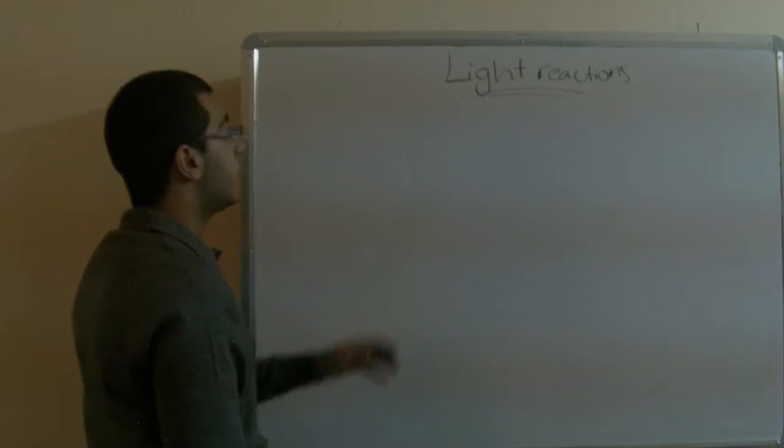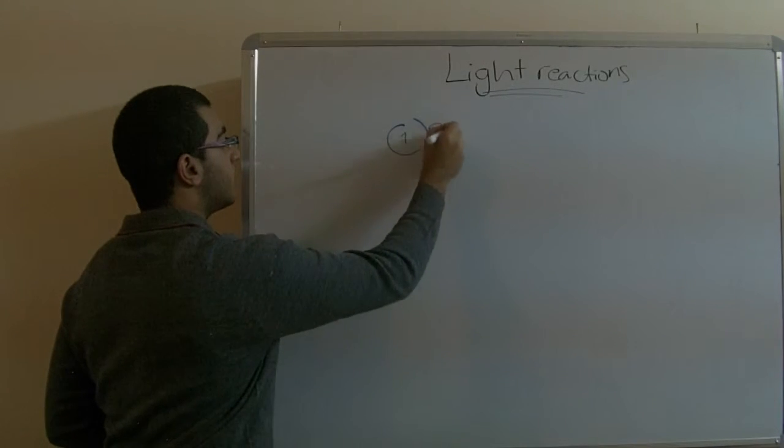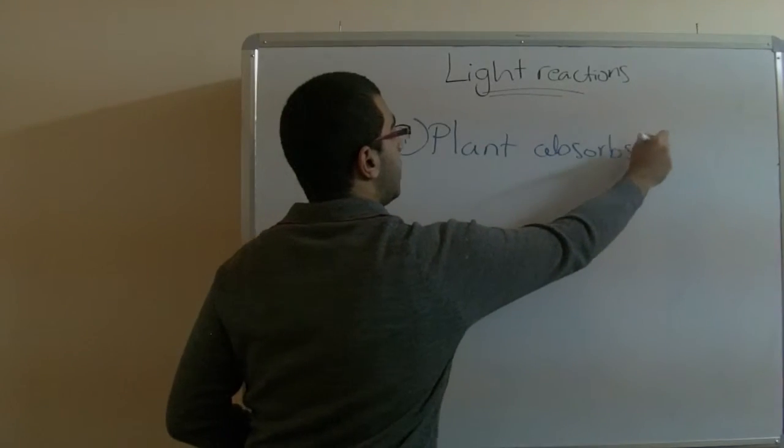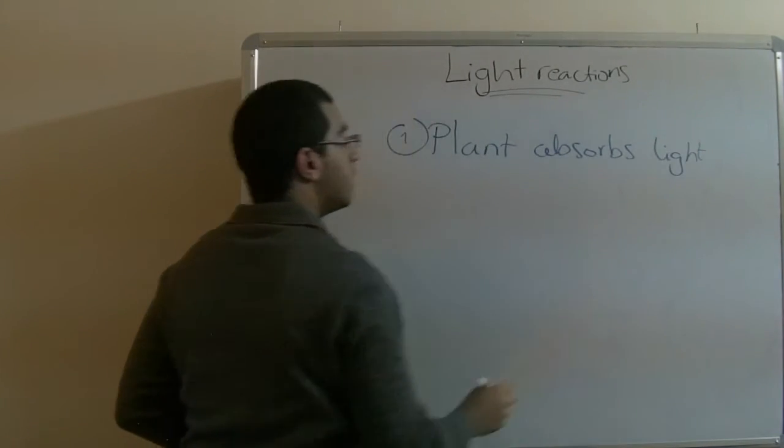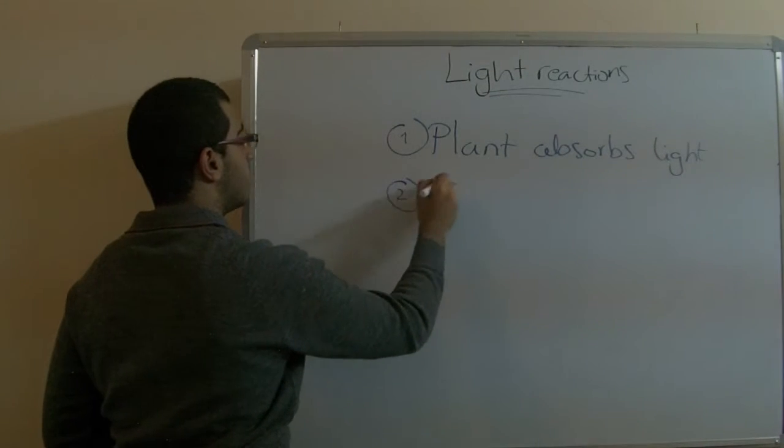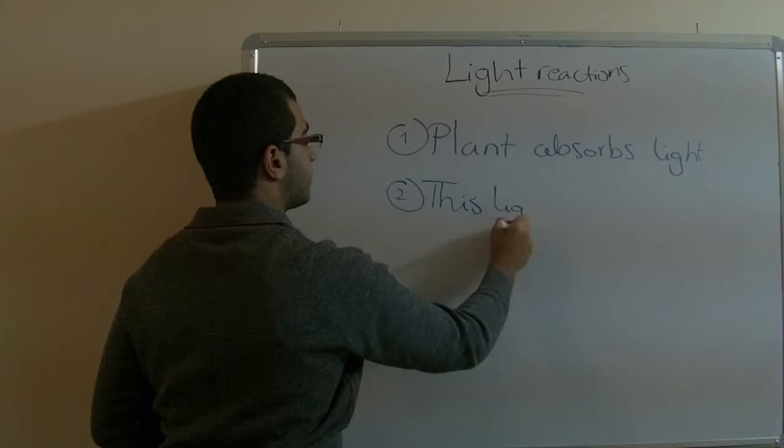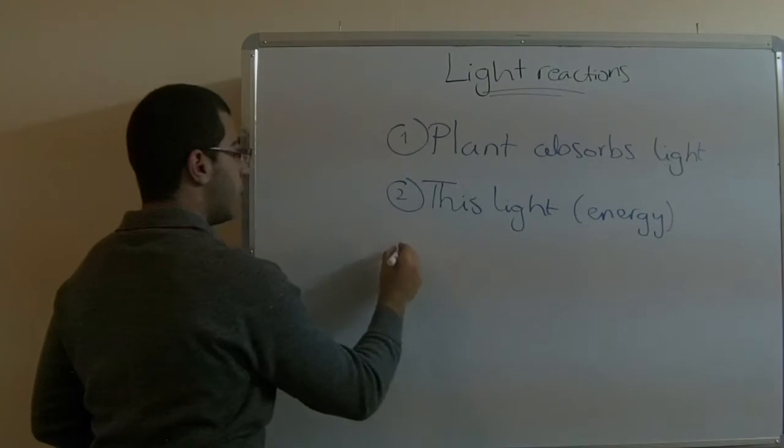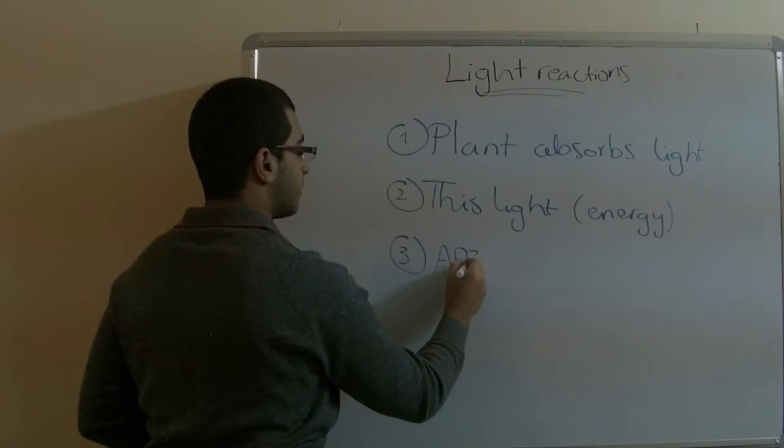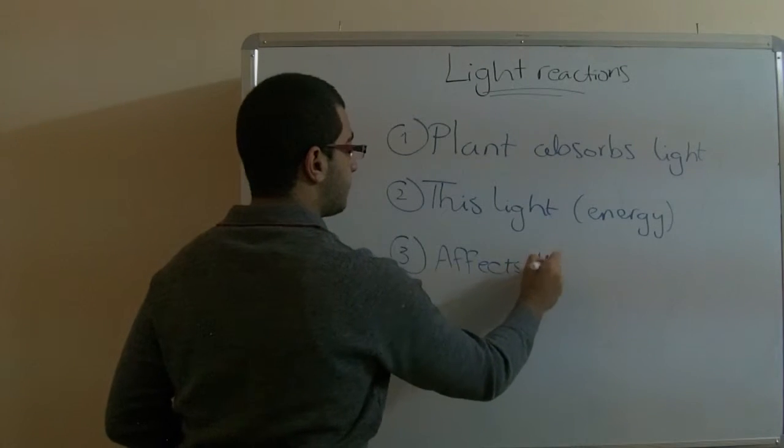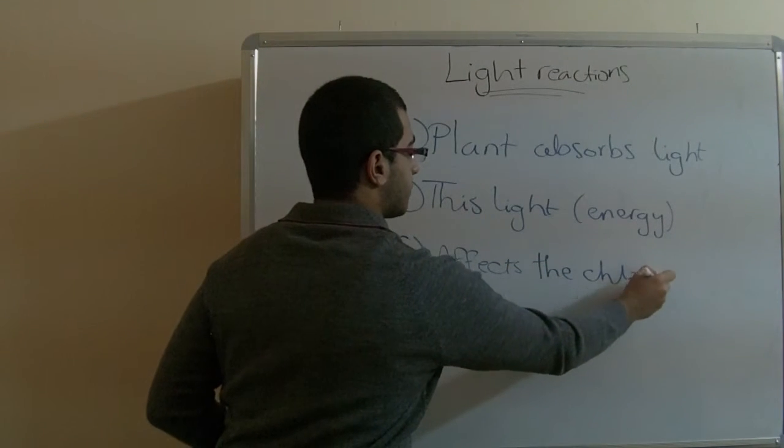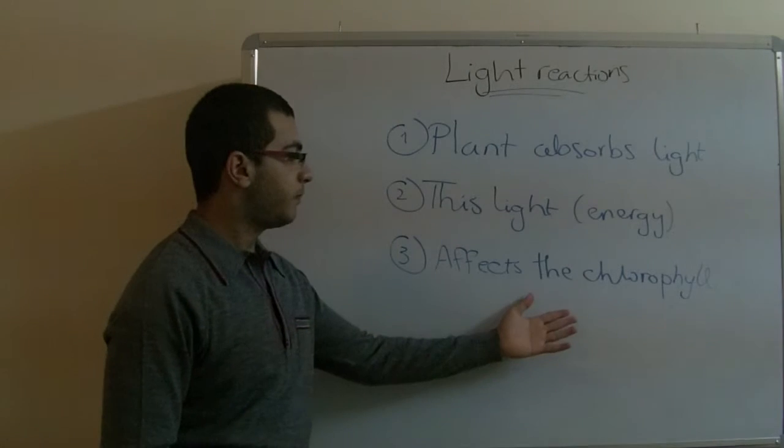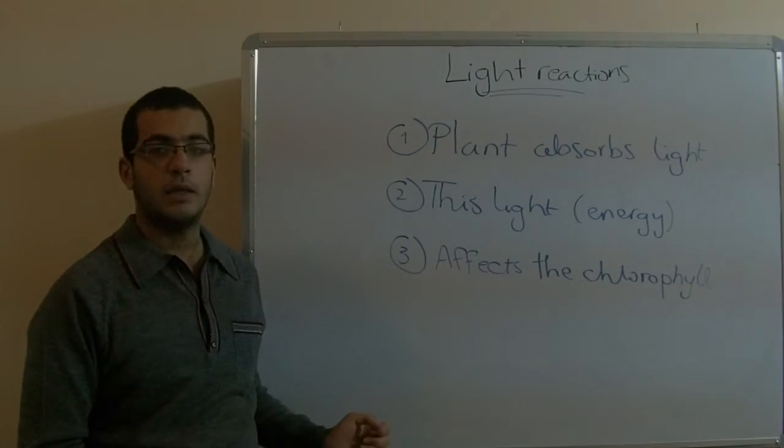First thing in the light reactions: the plant absorbs the light, and this light affects the chlorophyll. As we mentioned before, the chlorophyll is the material which absorbs the light in the plant.